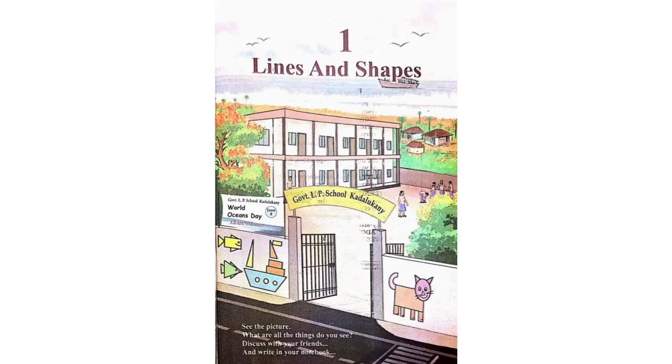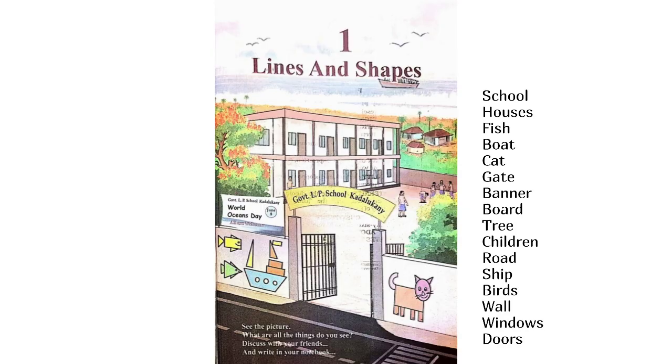What all things do you see? School, Houses, Fish, Boat, Cat, Gate, Banner, Tree, Children, Road, Ship, Birds, Wall, Windows, Doors.